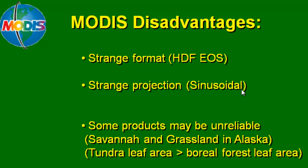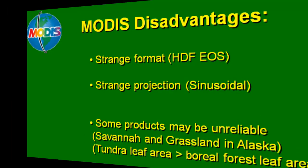Since MODIS is a global product, some products are unreliable in Alaska. For example, the MODIS land cover product classifies many places in interior Alaska as savanna or grassland, when they're actually shrubland in the boreal forest. Similarly, the tundra leaf area index from shrub tundra tends to be larger than the boreal forest leaf area index, which isn't really true — it's simply because tundra shrubs are broadleaf while boreal forest areas tend to be spruce.